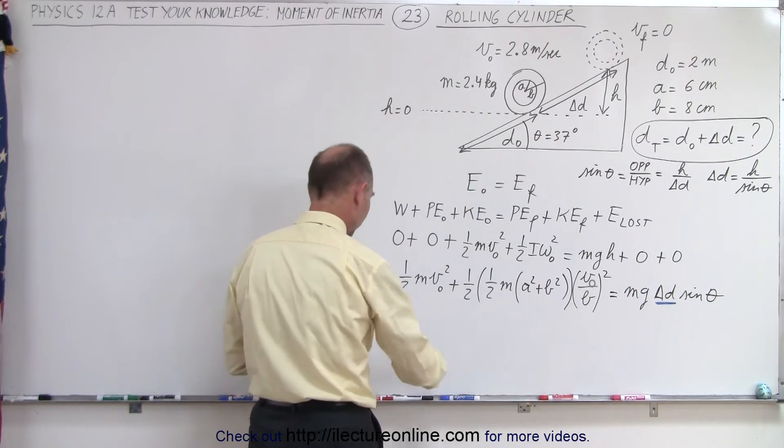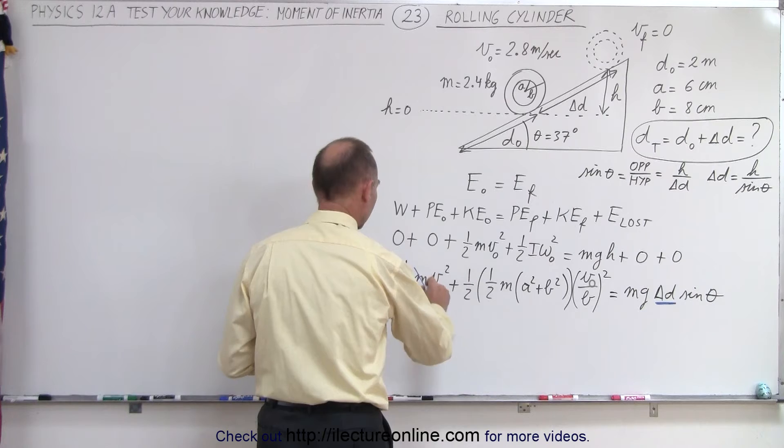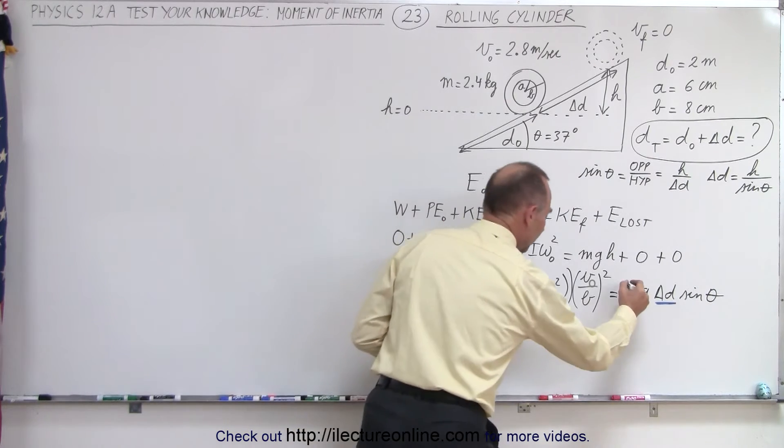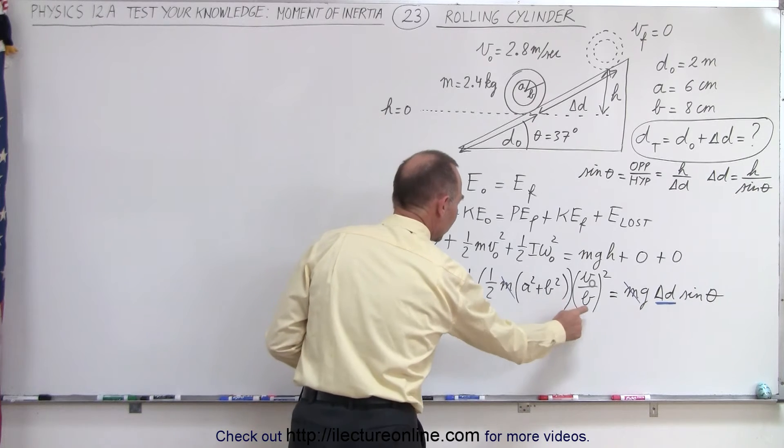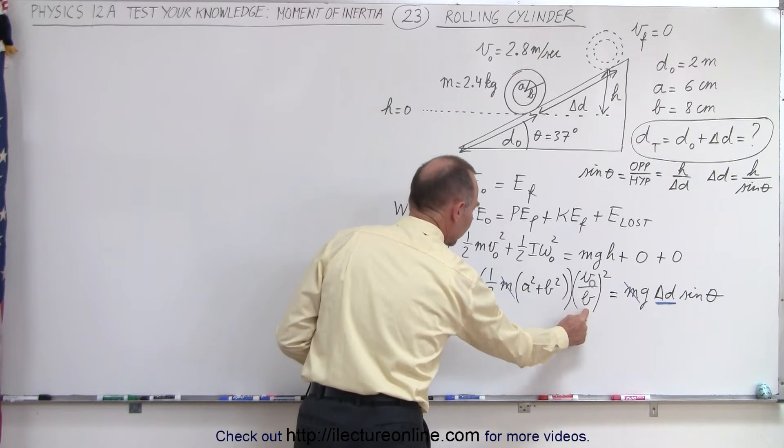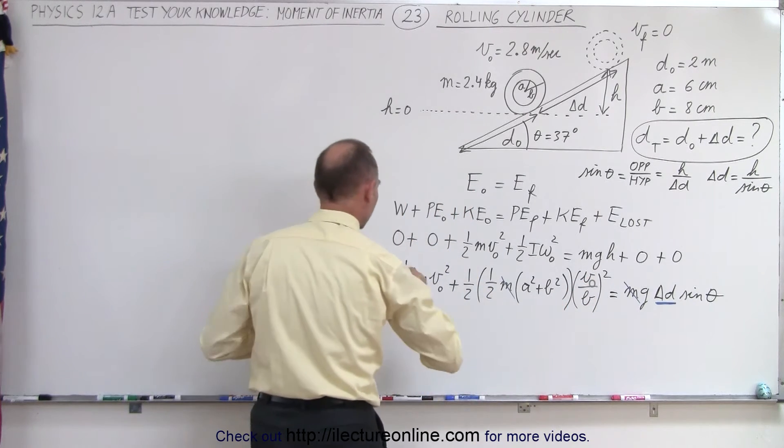But what we can probably do here is divide the b-square into here, and see what we get. And we have an m everywhere, so let's get rid of the m's, that makes it a little bit easier. Every term has an m in it, like that. And we can divide, this is v-square over b-square, we can divide the b-square in here, it'll get it as the following,